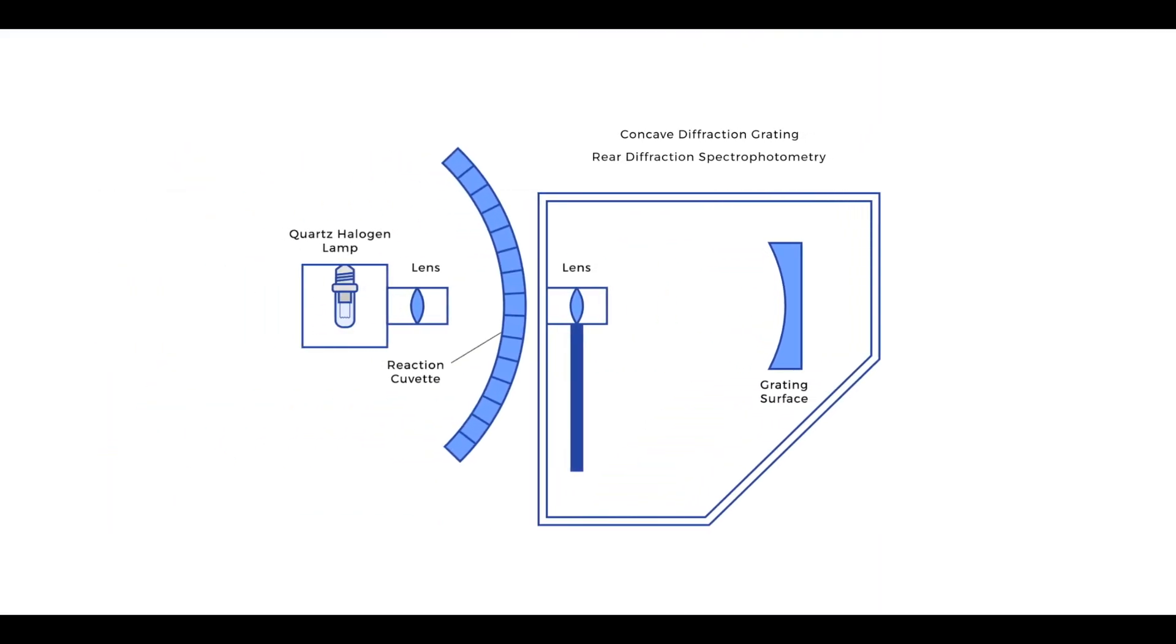The optical system of the TBA-120FR utilizes grating photometry, which provides access to 16 wavelengths ranging from 340 nanometers to 804 nanometers, accommodating a wide array of clinical chemistry tests.